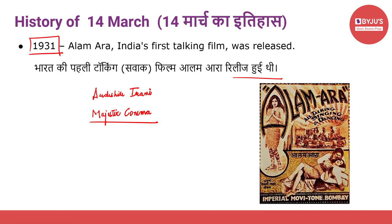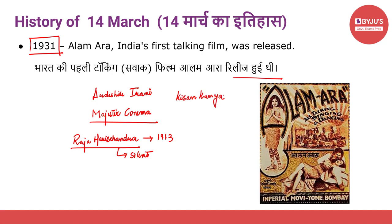Some more Indian cinema facts: Raja Harishchandra was the first Indian film, released in 1913 — it was a silent film. Kisan Kanya was India's first color film, released in 1937. And the movie Taal became the first ever Bollywood movie to be insured.